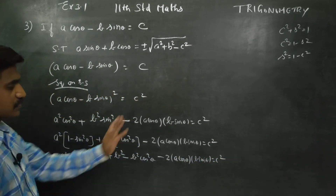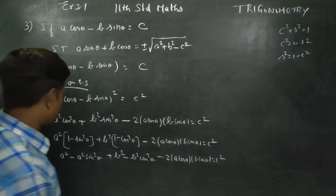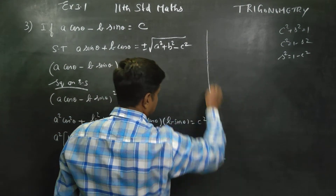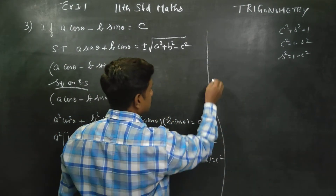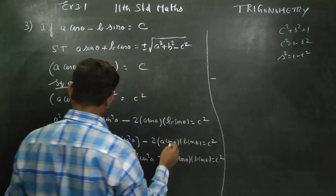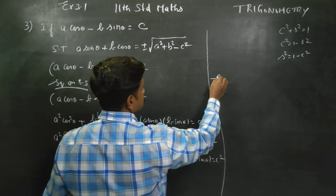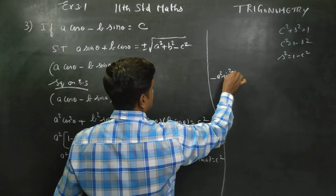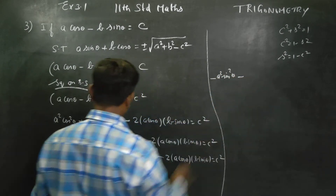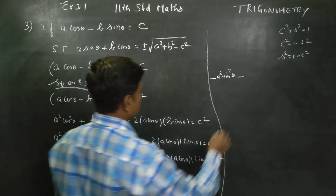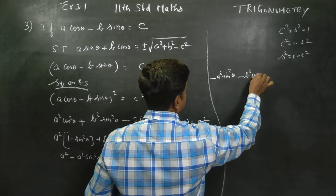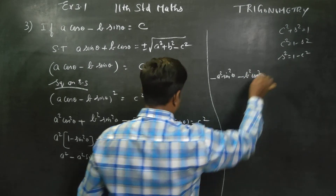Rearranging, we get A square plus B square minus A square sin square theta minus B square cos square theta minus 2AB cos theta sin theta is equal to C square.